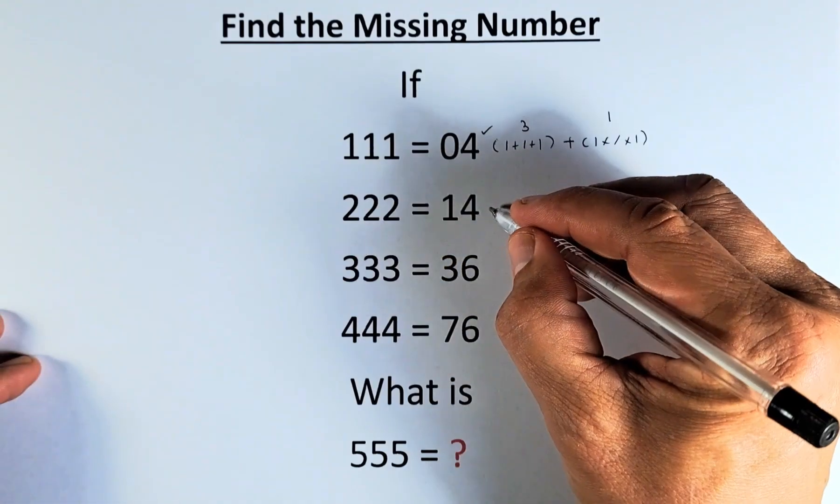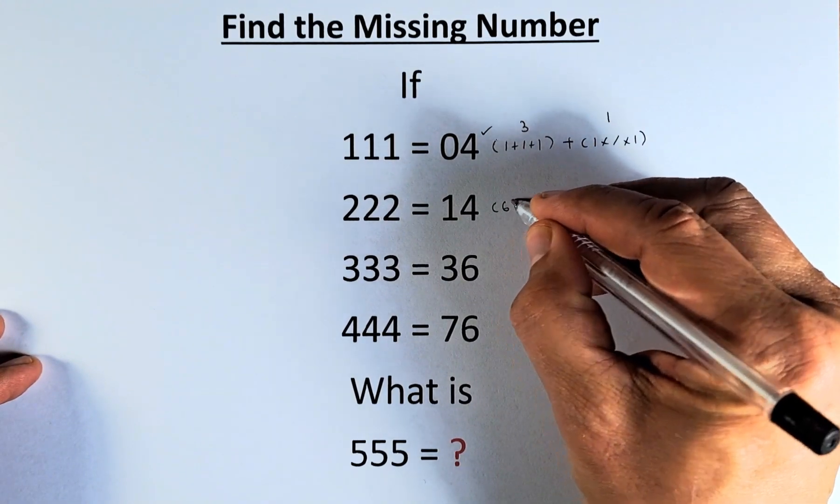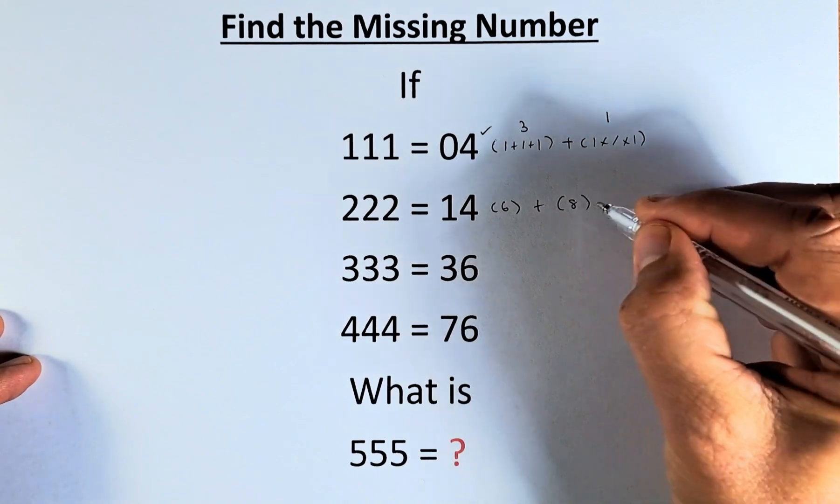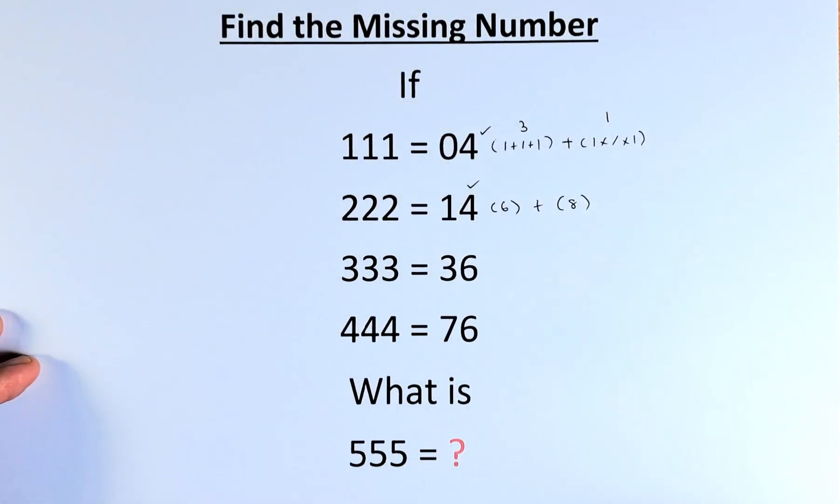Similarly, 222 equals 14. 2+2+2 is 6, plus 2×2×2 is 8, so 6+8 is 14.